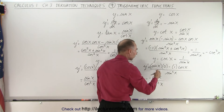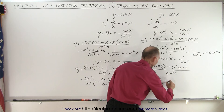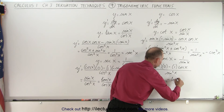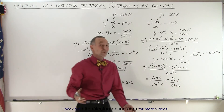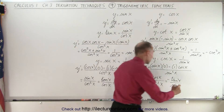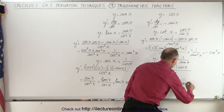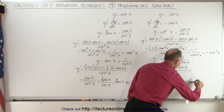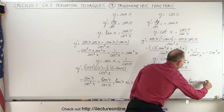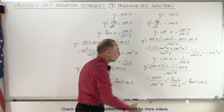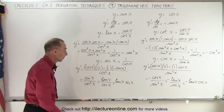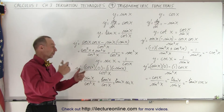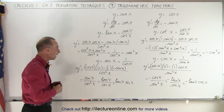The cosine over the sine is equal to the cotangent, so this can be written as minus the cotangent of x divided by the sine of x. One over the sine can be written as the cosecant, so this could be written as minus the cotangent of x times the cosecant of x. One of these forms is a correct answer — it just depends on what your professor wants you to write.